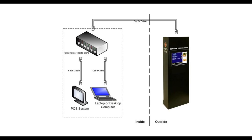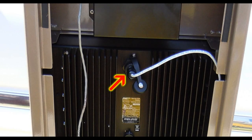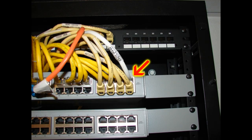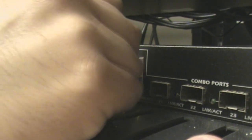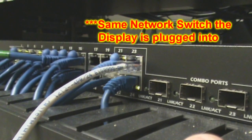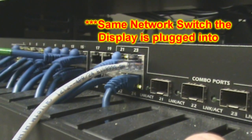The fastest way to update your display is by using network connectivity. This method is only an option if your display has a network connector on the back and there is a cable running from this connector to the network switch inside the store. If it does, you can run a CAT5 patch cable from your computer to an open port on the same network switch that the display is plugged into.